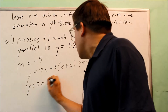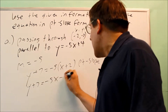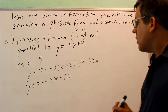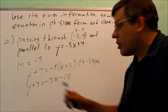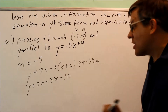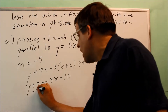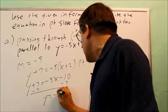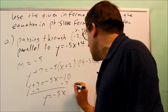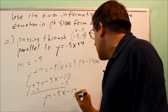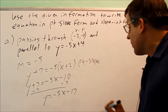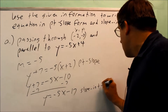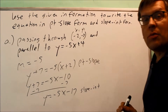Now we want the slope-intercept form. We expand to get y plus 7 equals negative 5x minus 10, then subtract 7 from both sides. That gives us y equals negative 5x minus 17, which is the correct slope-intercept form.